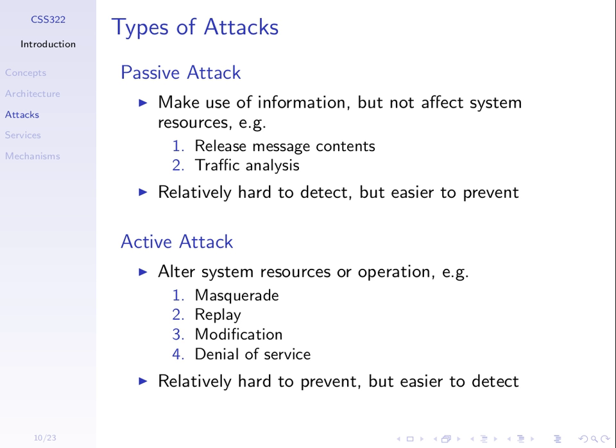A passive attack makes use of information but doesn't affect system resources — it just observes without modifying how the system operates. An active attack modifies or alters system resources or operations. We'll discuss two types of passive attacks — release of message contents and traffic analysis — and four types of active attacks.